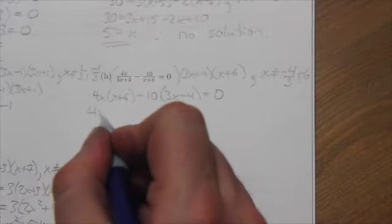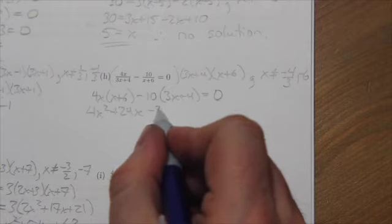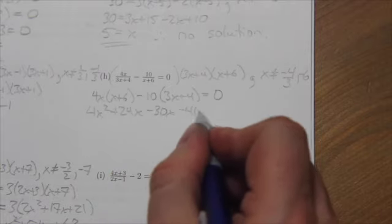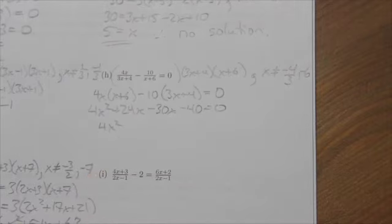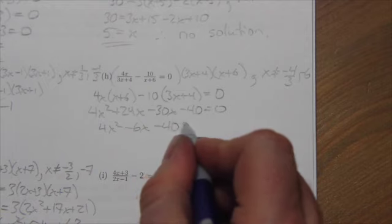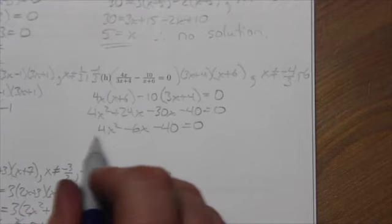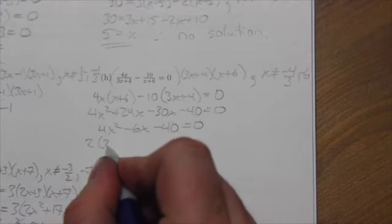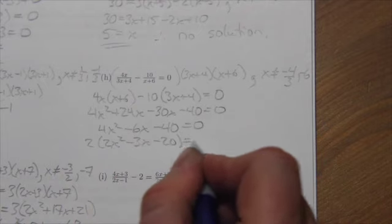Multiplying out gives 4x squared plus 24x minus 30x minus 40 equals 0. That simplifies to 4x squared minus 6x minus 40 equals 0. There's a common factor of 2 in everything, so dividing through gives 2x squared minus 3x minus 20 equals 0.